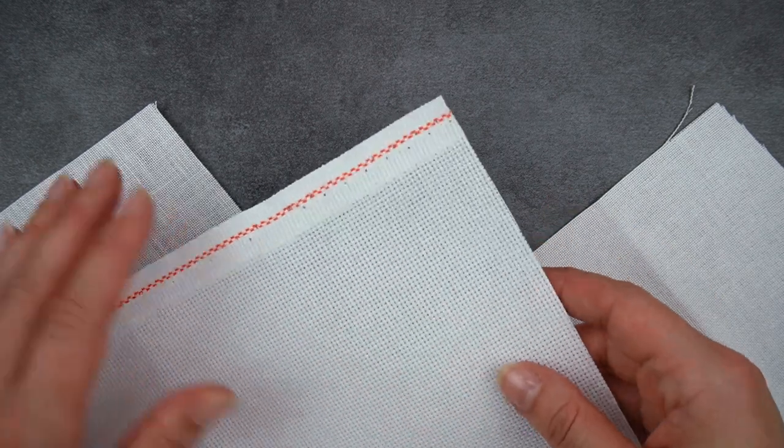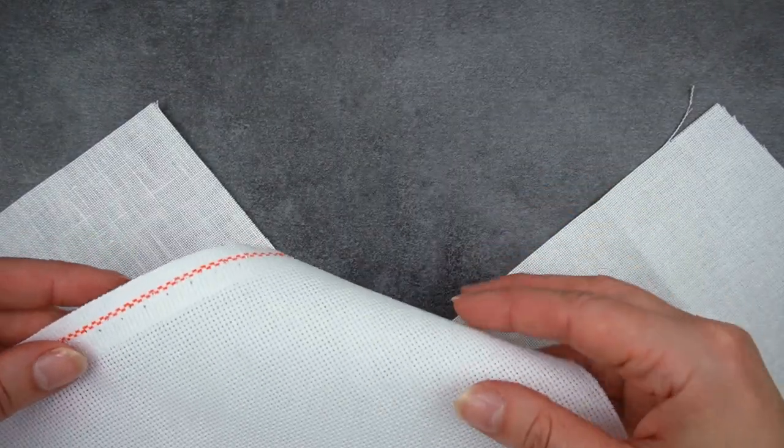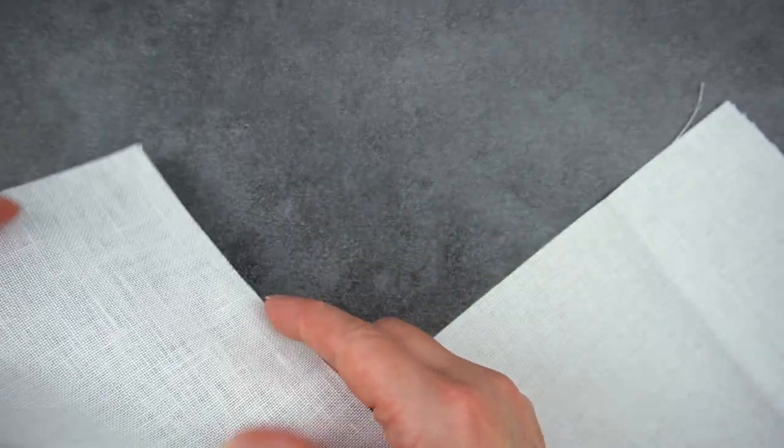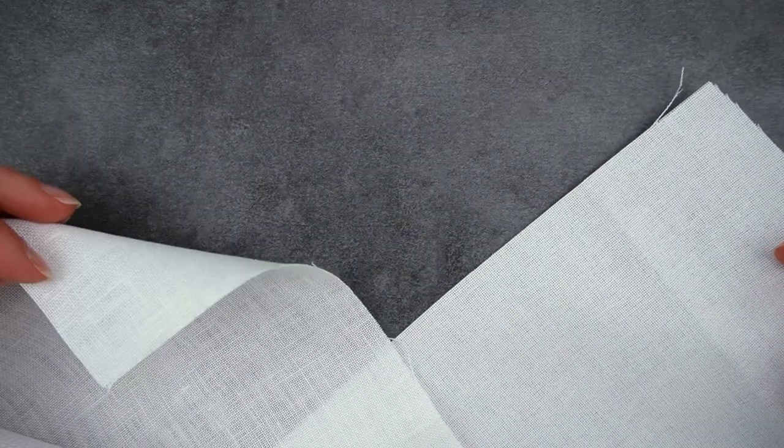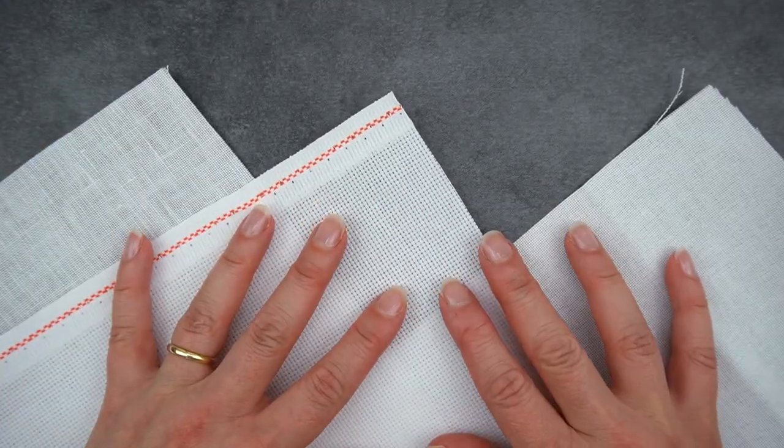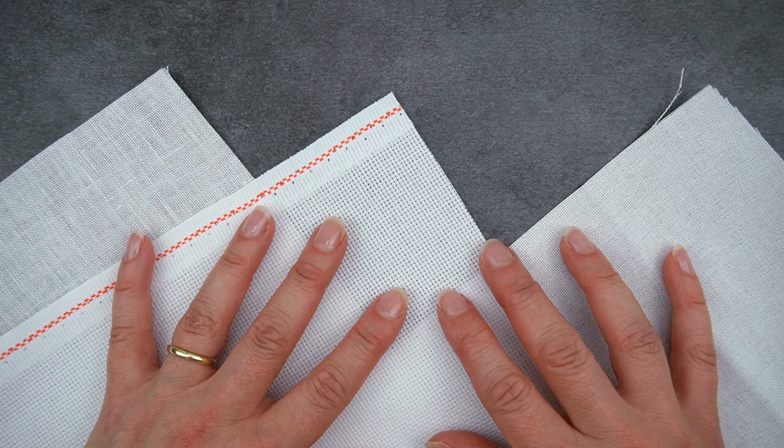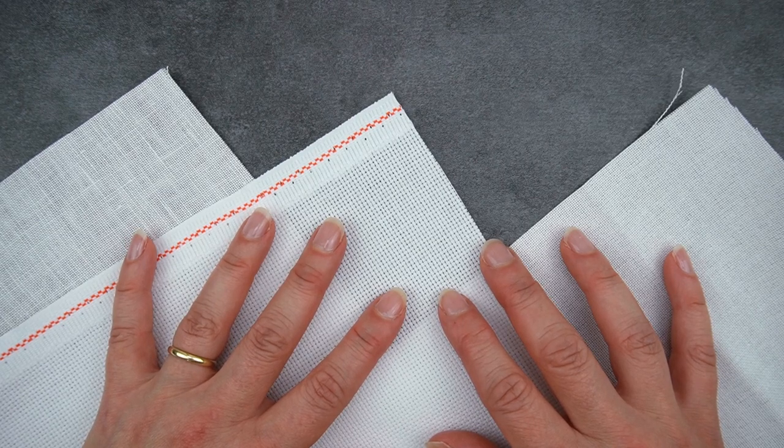Now the second difference is that the fabric's softer so the Aida tends to be a little bit stiffer. The linen is actually not too soft but the even weave is softer. I tend to find even weave is actually softer than linen. So that can be a little bit harder to handle and to get the stitch tension correct and that's whether you're using a hoop or not.